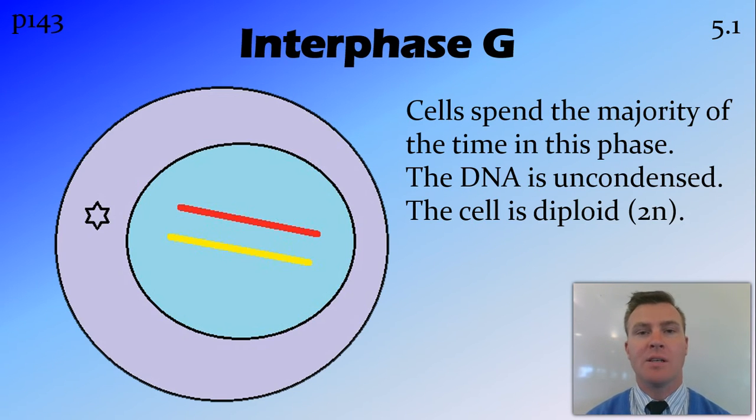The first stage that we're going to talk about, and as I said it's not technically part of mitosis but important, is interphase G. Now, interphase G is what the cell is usually doing with its life. It probably occurs for 80 to 90% of the time of a cell, and that's when the DNA is uncondensed and it's going about its business, making proteins and doing all the things that cells do.